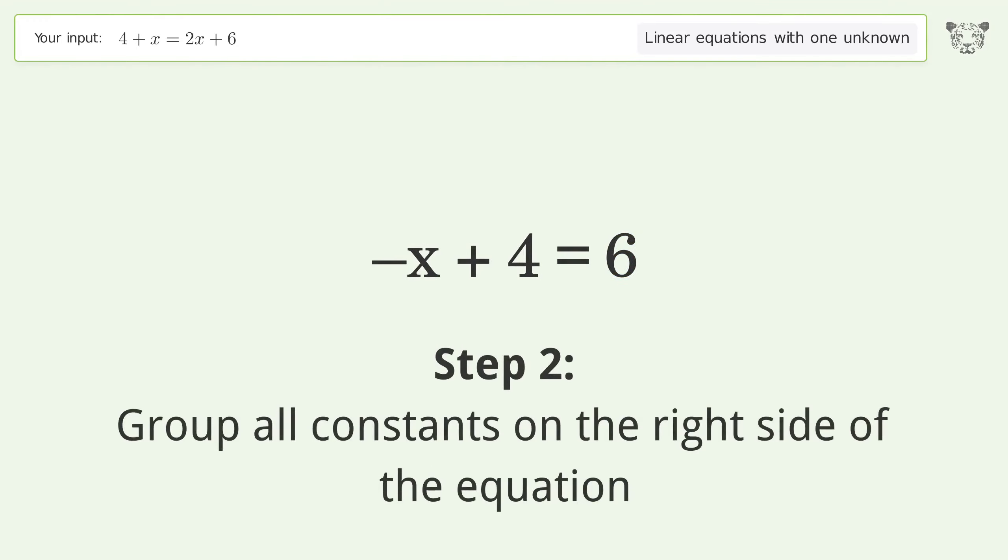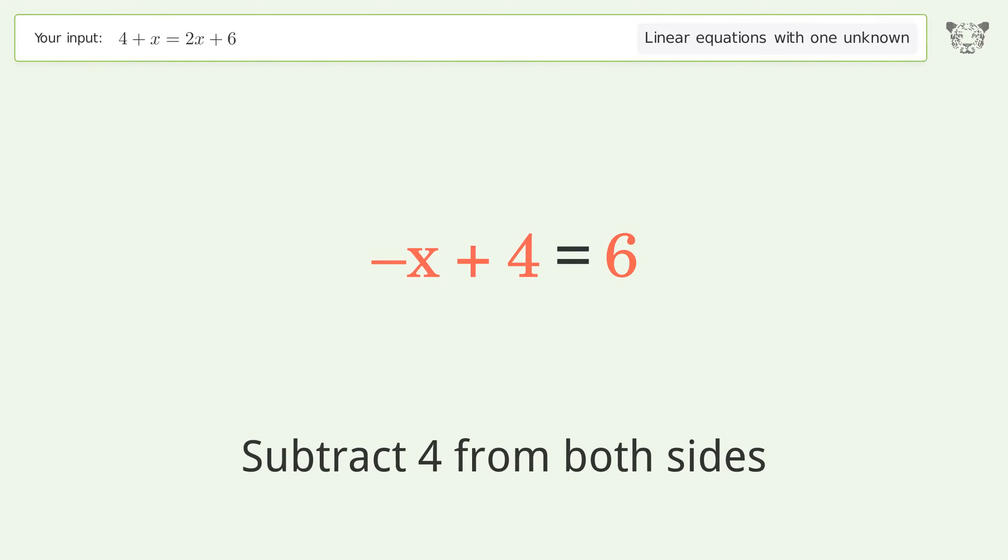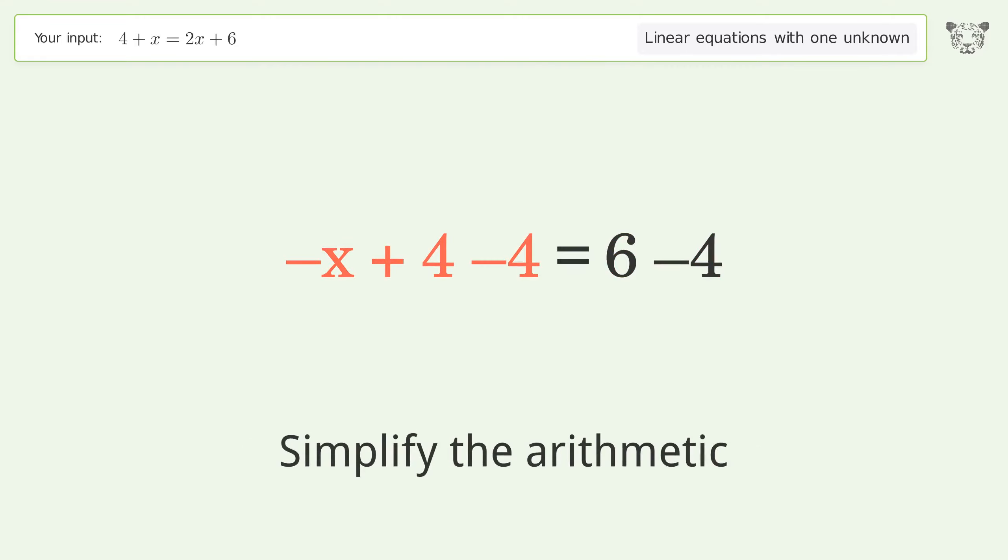Group all constants on the right side of the equation. Subtract 4 from both sides. Simplify the arithmetic.